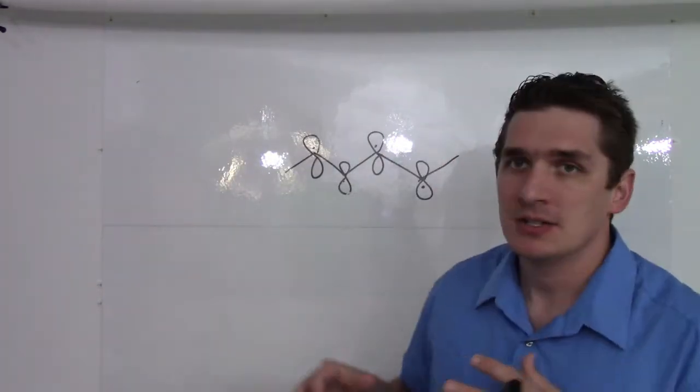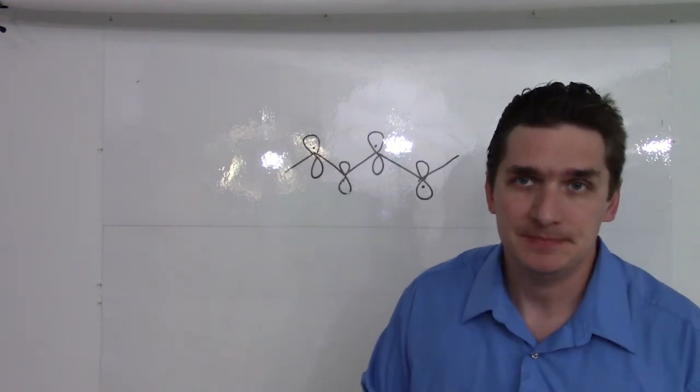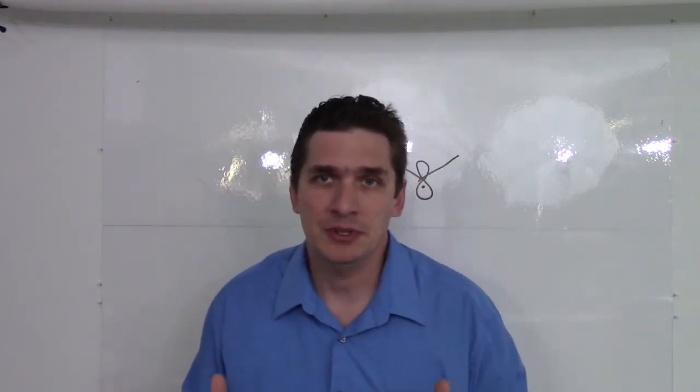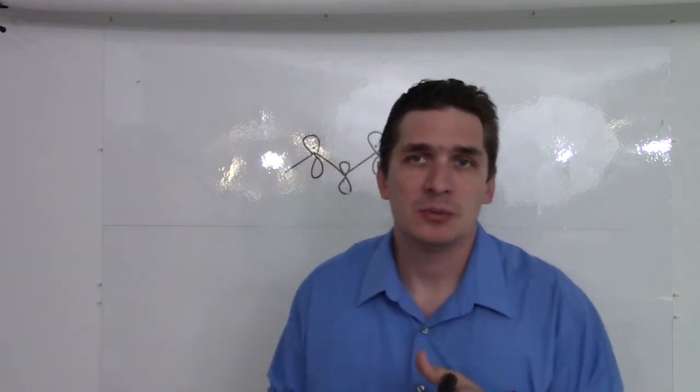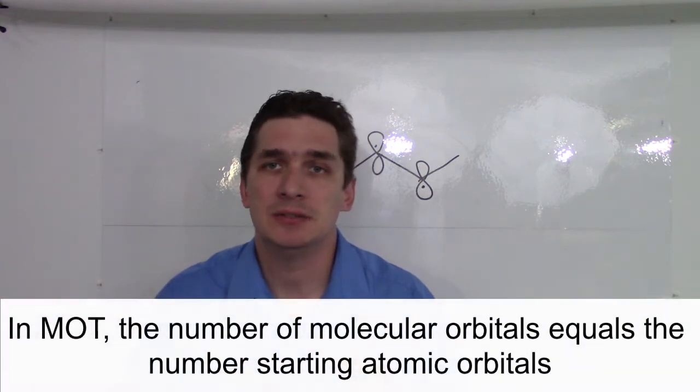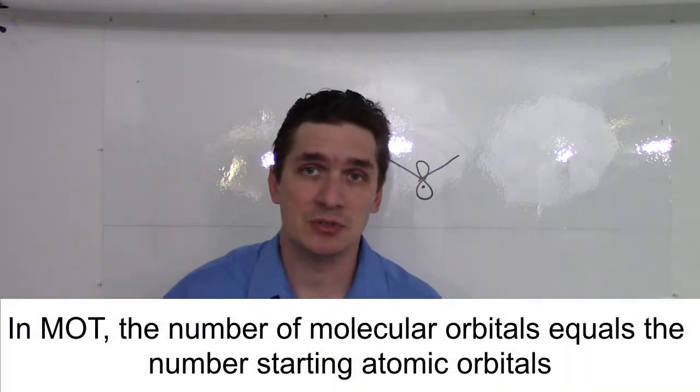Let's look at our hexadiene before we put the electrons in. Now, an important aspect of molecular orbital theory is that the number of molecular orbitals equals the number of atomic orbitals. So, the number of molecular orbitals you can generate equals the number of atomic orbitals that you start with.